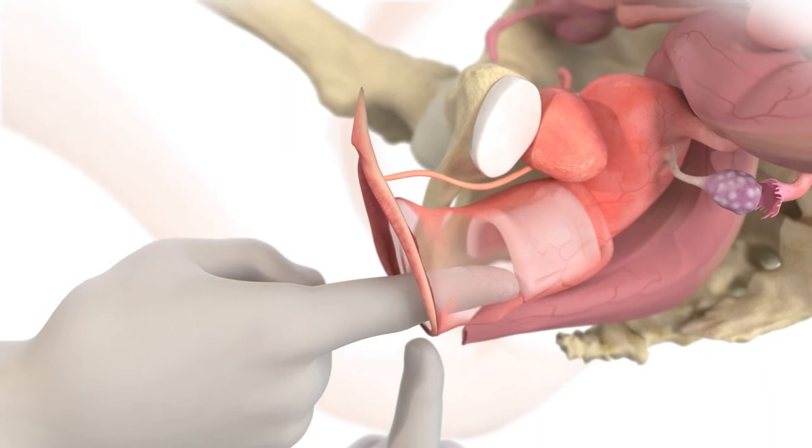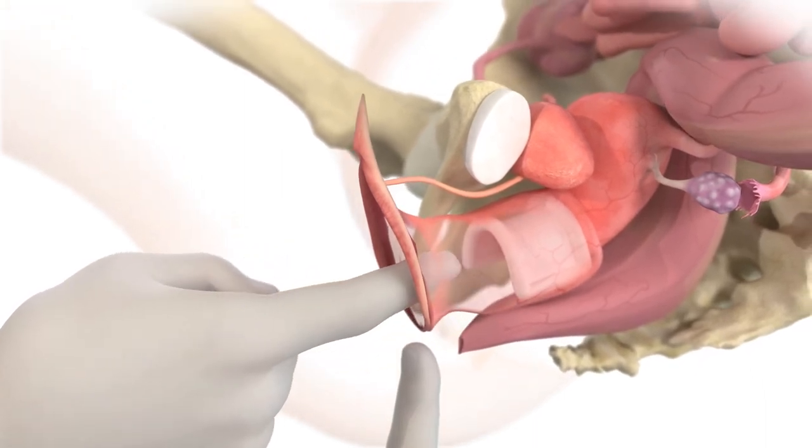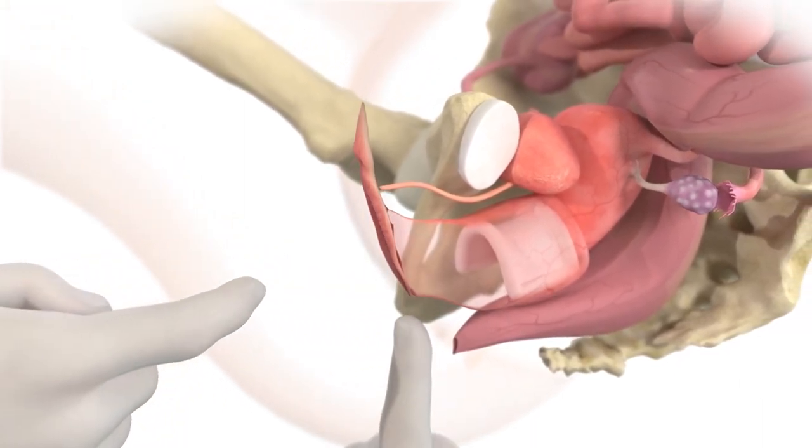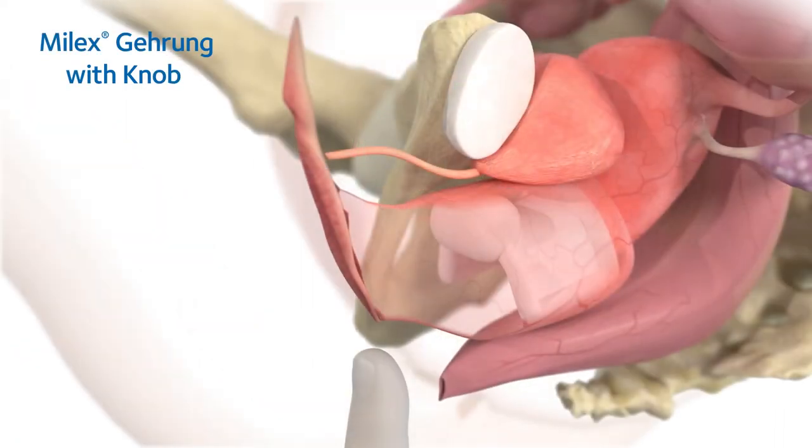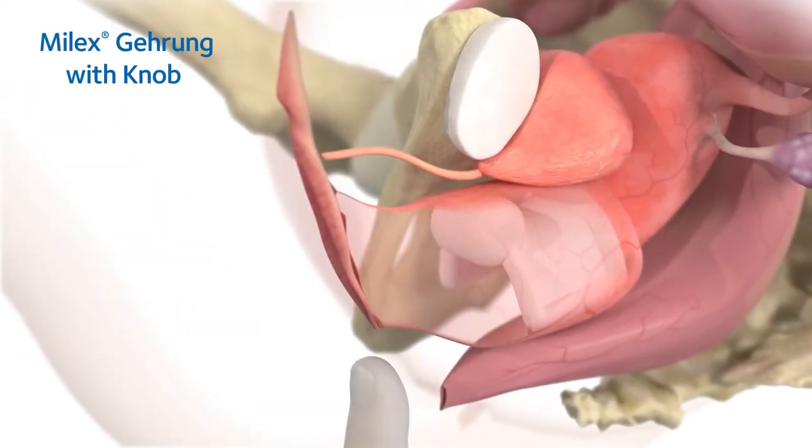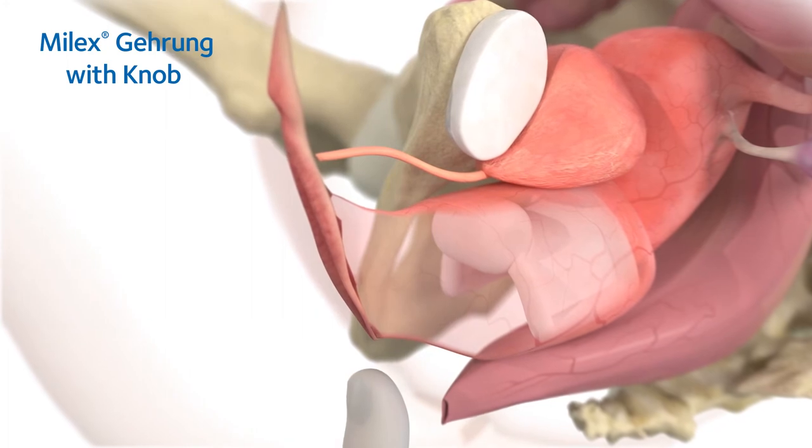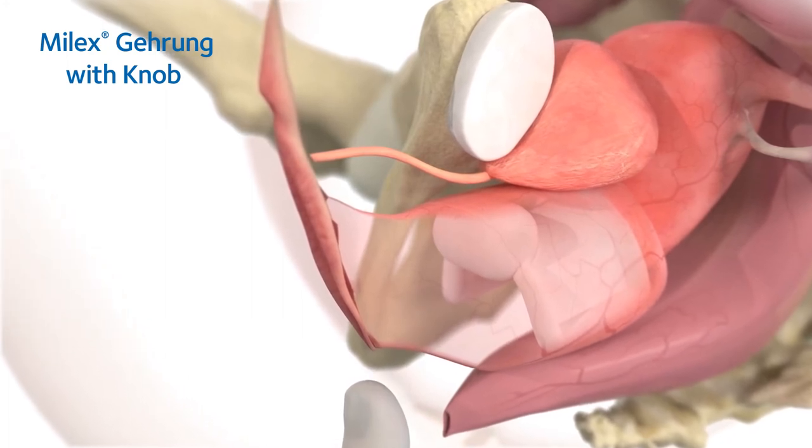Gradually push the back arch over the cervix in the anterior fornix and the front arch behind the symphysis pubis. In fitting the Gerung with knob pessary, the knob should rest so that it supports the urethro-vesicle junction.